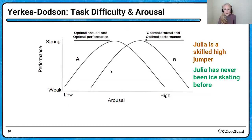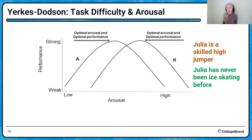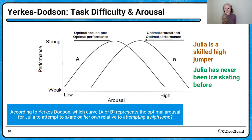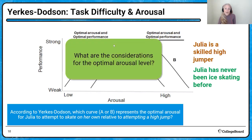What are some considerations for optimum levels of arousal? We have Julia, a skilled high jumper, and also Julia who has never been ice skating. Consider task difficulty: if something is really hard for you, do you want high or low arousal? According to Yerkes-Dodson, curve A represents the best level of arousal for someone attempting a new task. Task difficulty is a really important consideration for determining optimum level of arousal.